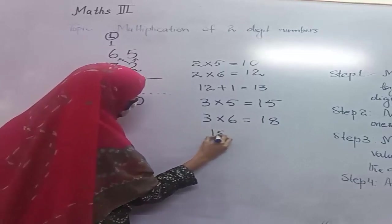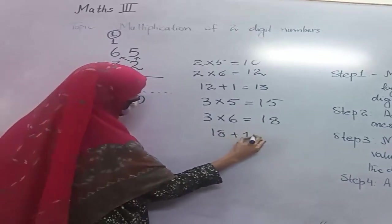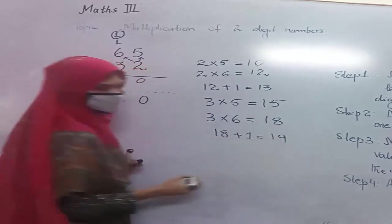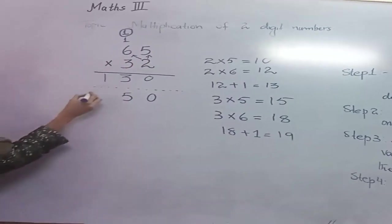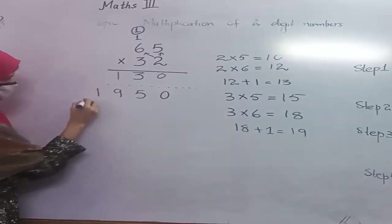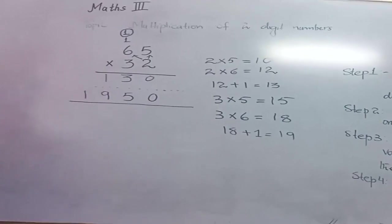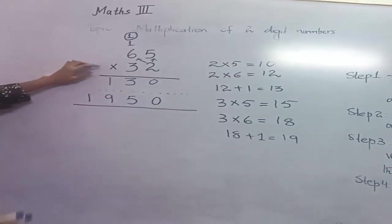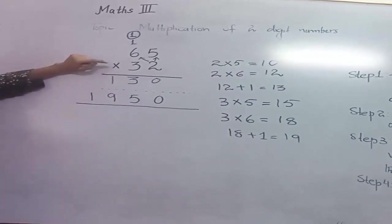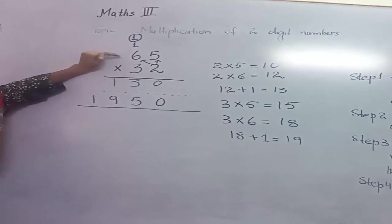In 18 we add 1. The answer will be 19. So we write here 19. Students, we get the product of 3 multiplied by 5 and 3 multiplied by 6. Now we apply step number 4.